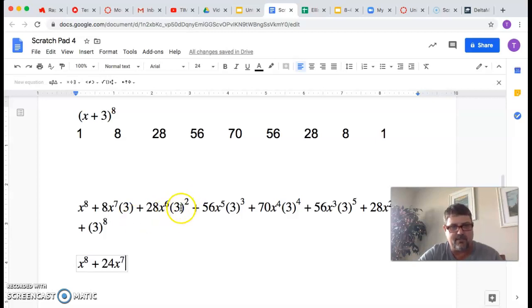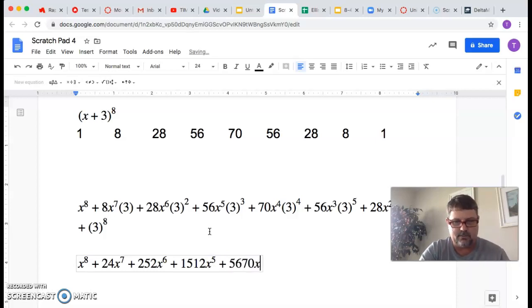Then we've got 3 squared times 28. And I've already pre-calculated this. That's 252x to the 6. And the next one you get is 1512, that's what I'm saying, 3 cubed times 56, x to the 5th. And the next one you get is 5670x to the 4th.